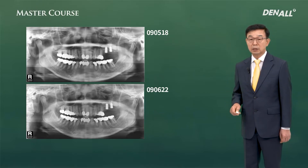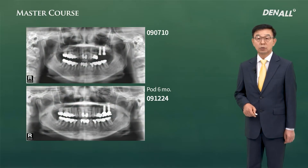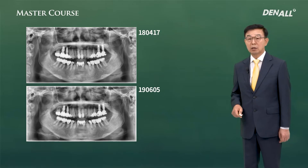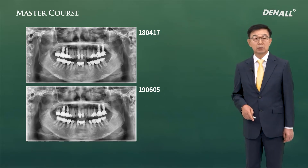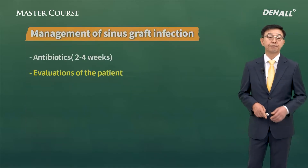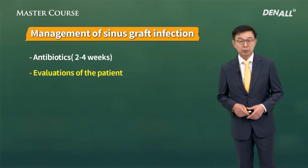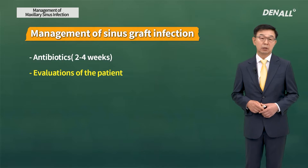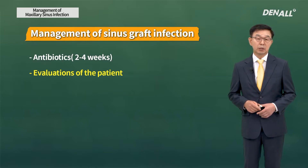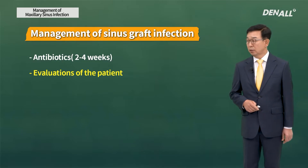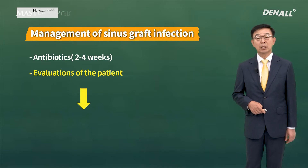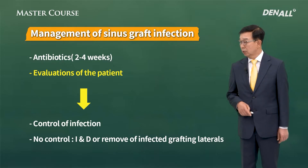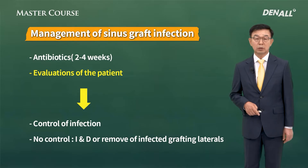The symptoms and conditions improved with just medication, and the bone graft material became more stabilized. After six months, prosthesis was delivered. After ten years, the implant is well maintained. Therefore, making diagnosis early and providing antibiotics early on is very important. After providing antibiotics, there are cases where healing is done nicely; however, rarely it can progress into chronic sinusitis or fistula can be formed.